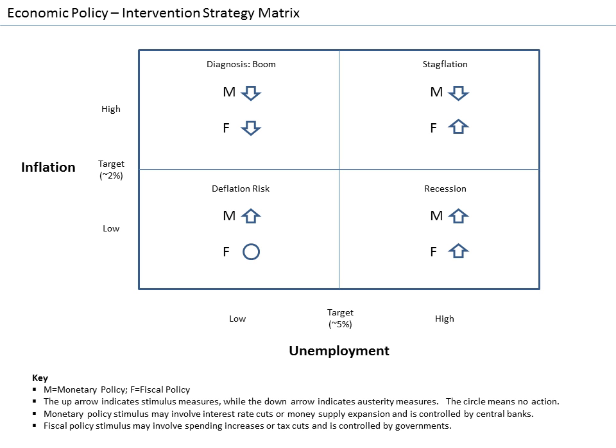Macroeconomic policy is usually implemented through two sets of tools: fiscal and monetary policy. Both forms of policy are used to stabilize the economy, which can mean boosting the economy to the level of GDP consistent with full employment. Macroeconomic policy focuses on limiting the effects of the business cycle to achieve the economic goals of price stability, full employment, and growth.